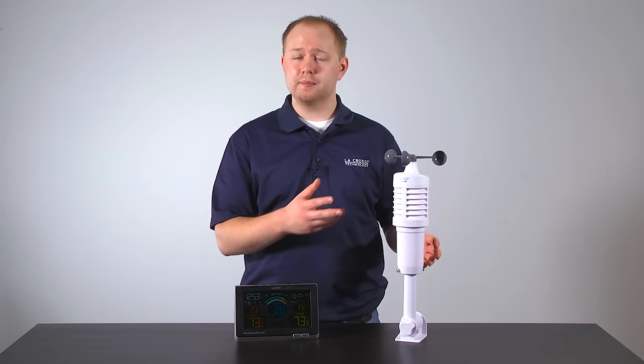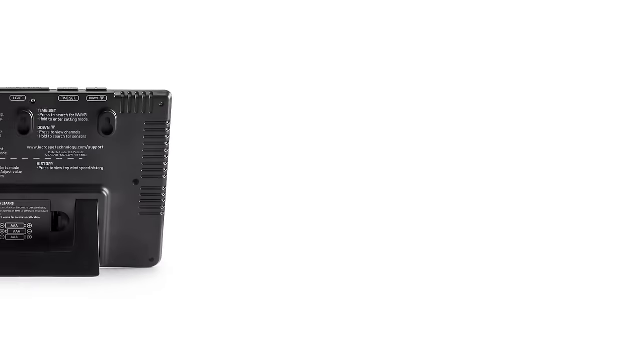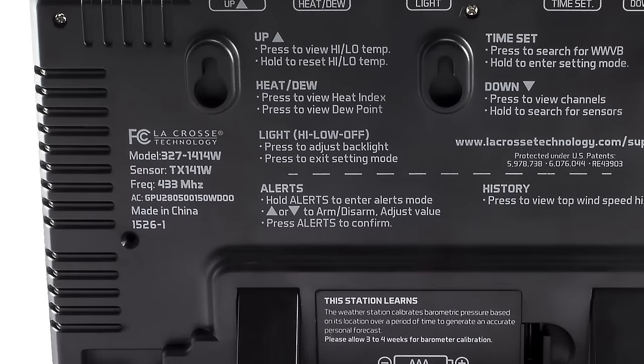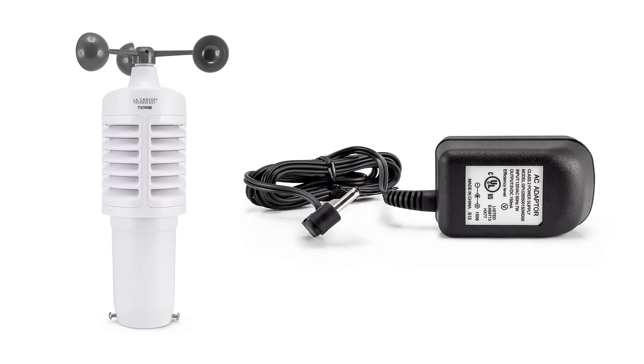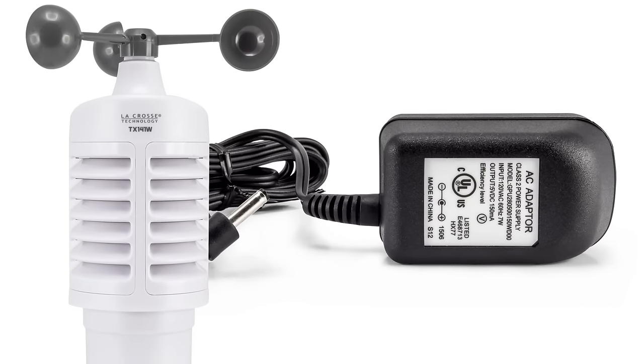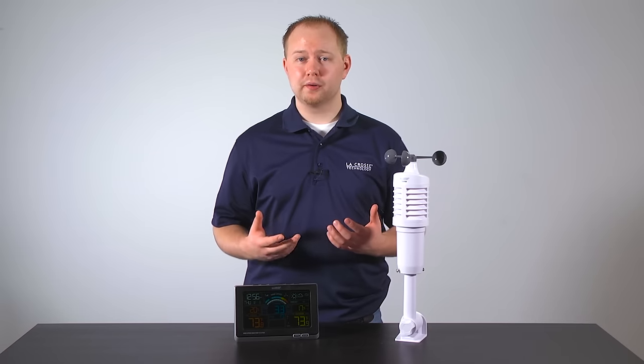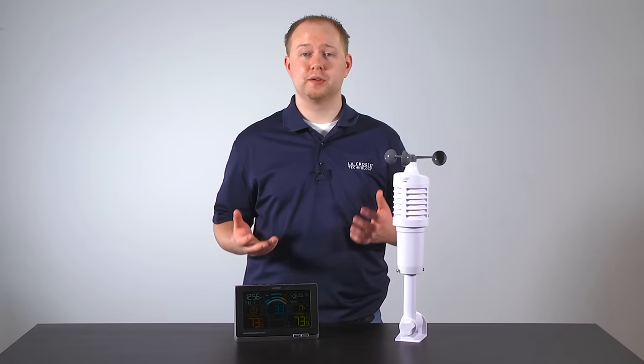Another important thing to point out would be the model numbers for this unit. If you flip the station around to the backside, you will find not only the station's model number, but also the sensor and AC adapter model numbers that work with it as well. Additionally, each of these parts will have their own model numbers printed on themselves as well. Knowing where to find these model numbers will be important if you wish to search for more information about this product online.